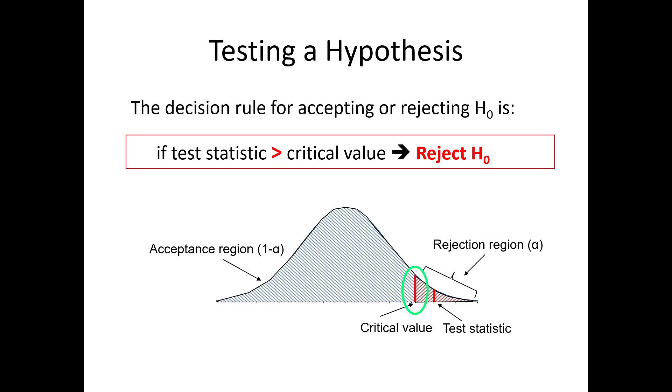The area to the left of the critical value is the acceptance region. If the test statistic was less than that critical value, it would lie in the acceptance region, and you could not reject the null. The rejection region is a really important concept.